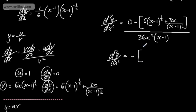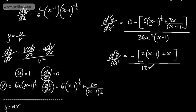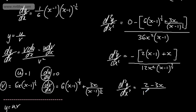Multiplying top and bottom by (x minus 1) to the half and dividing by 3: the numerator becomes 2(x minus 1) plus x, which is 3x minus 2, and we take the negative, giving 2 minus 3x. The denominator becomes 12x squared times (x minus 1) to the 3 over 2. So d²y/dx² = (2 minus 3x) over 12x squared (x minus 1) to the 3/2, which is the simplest form.